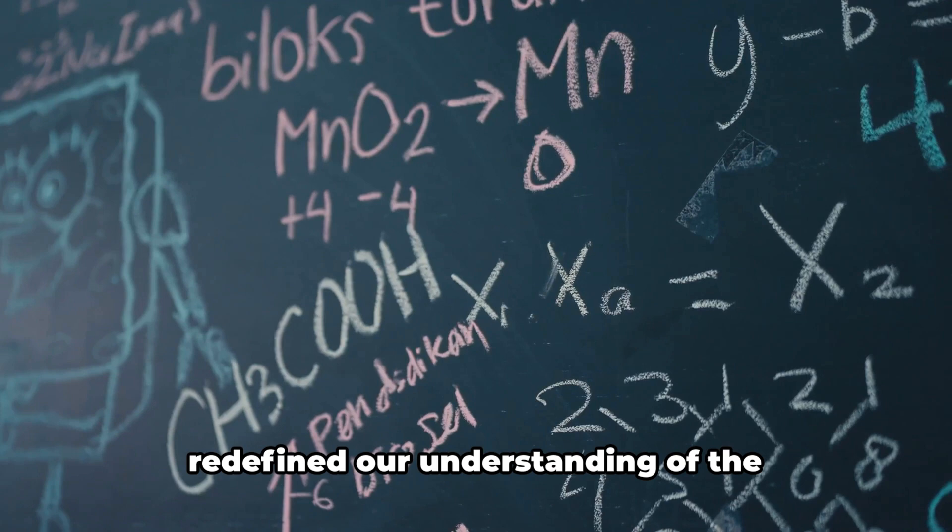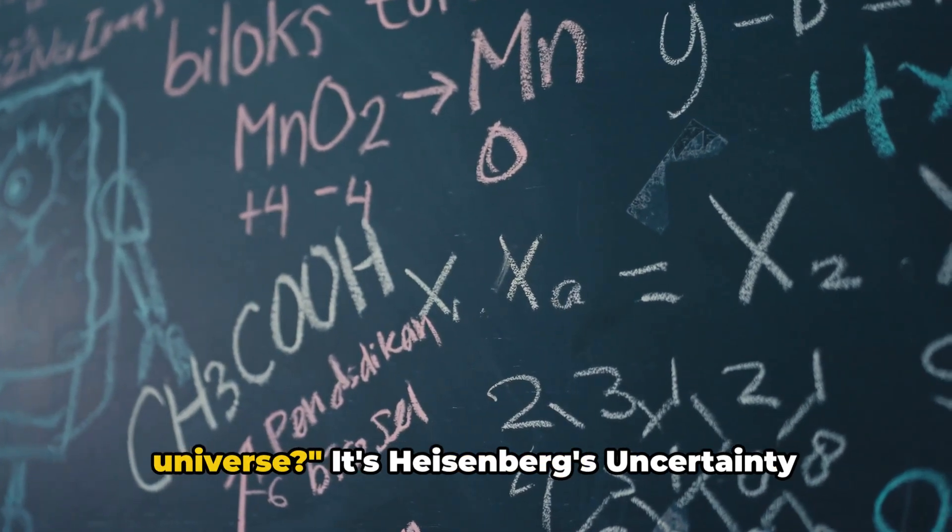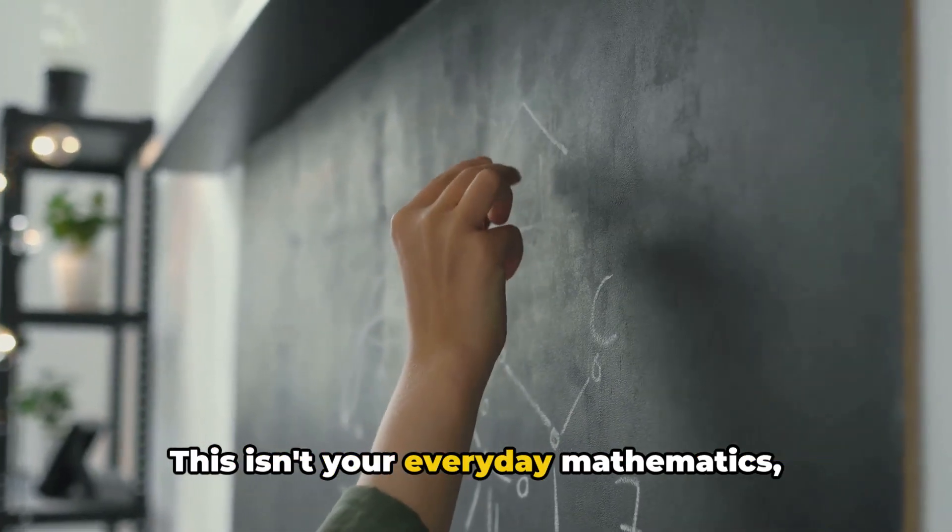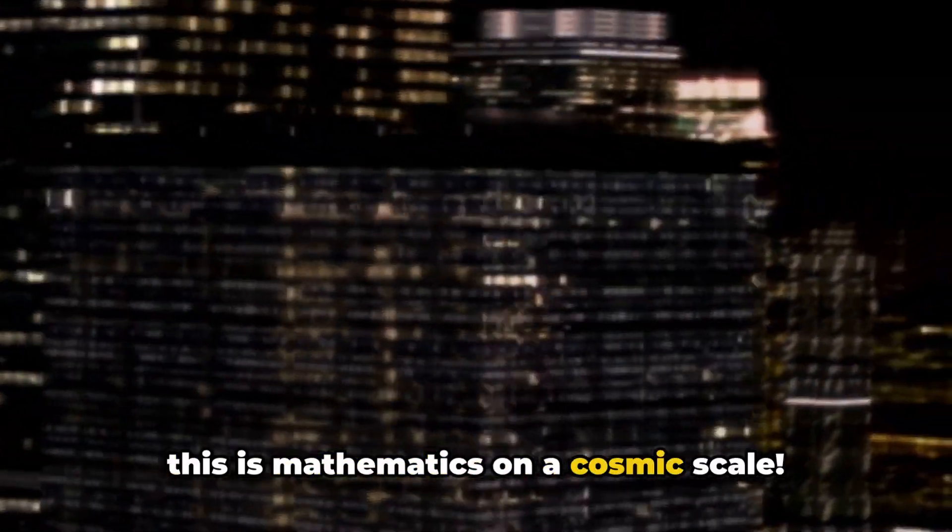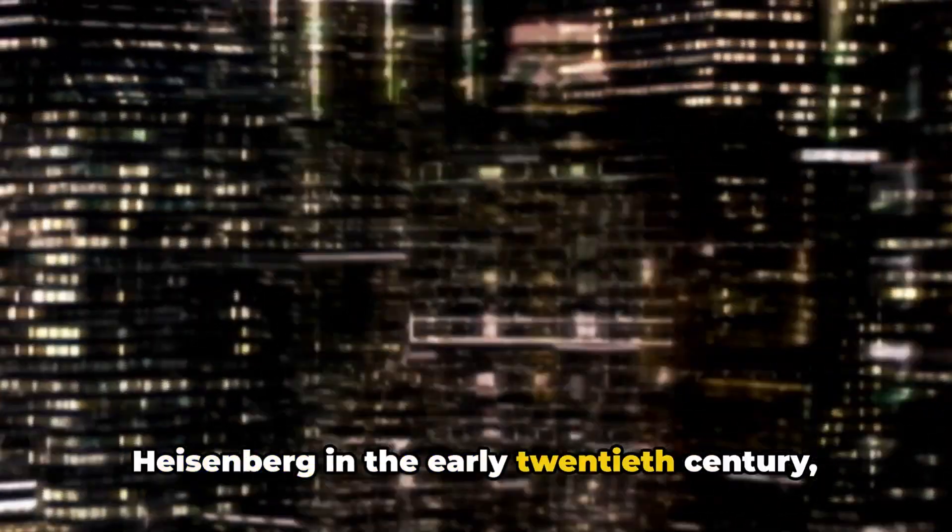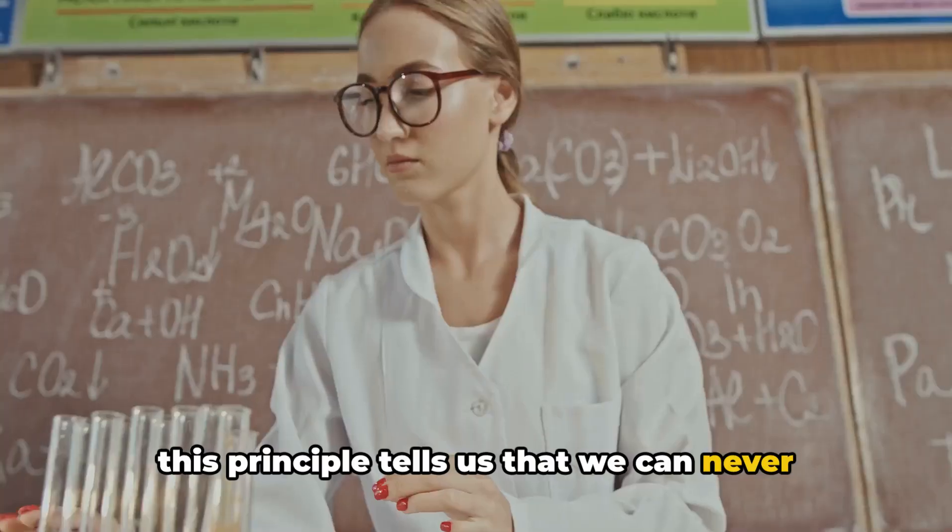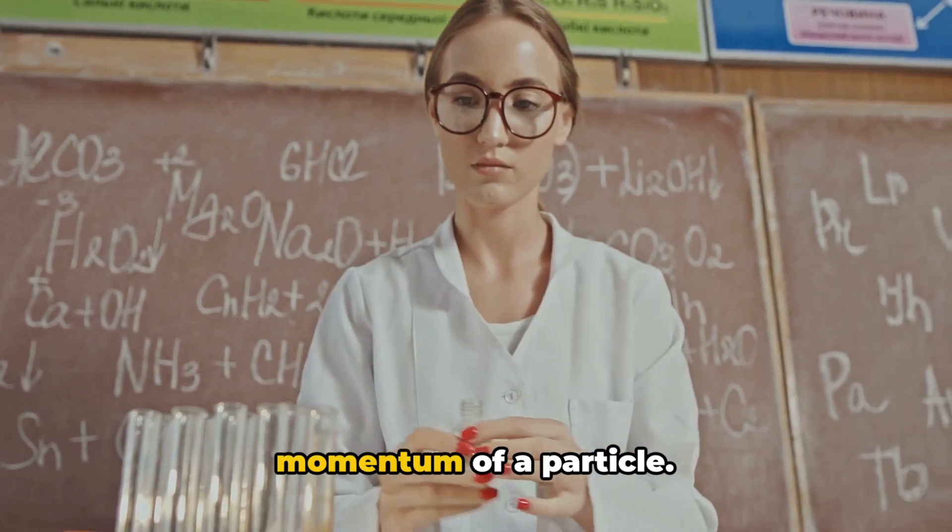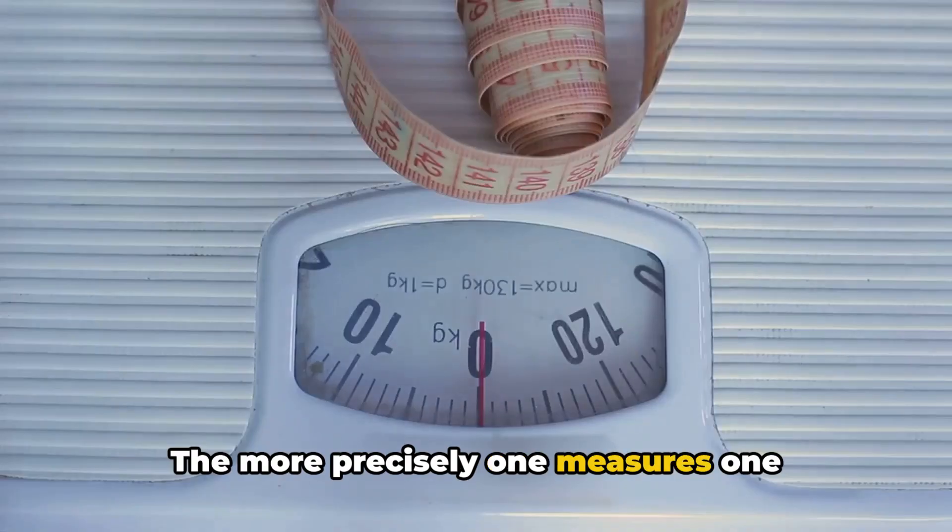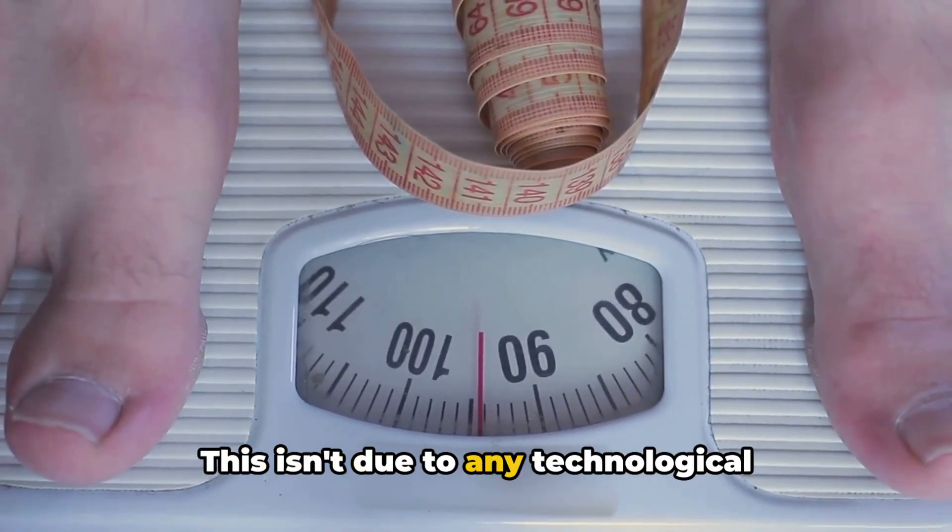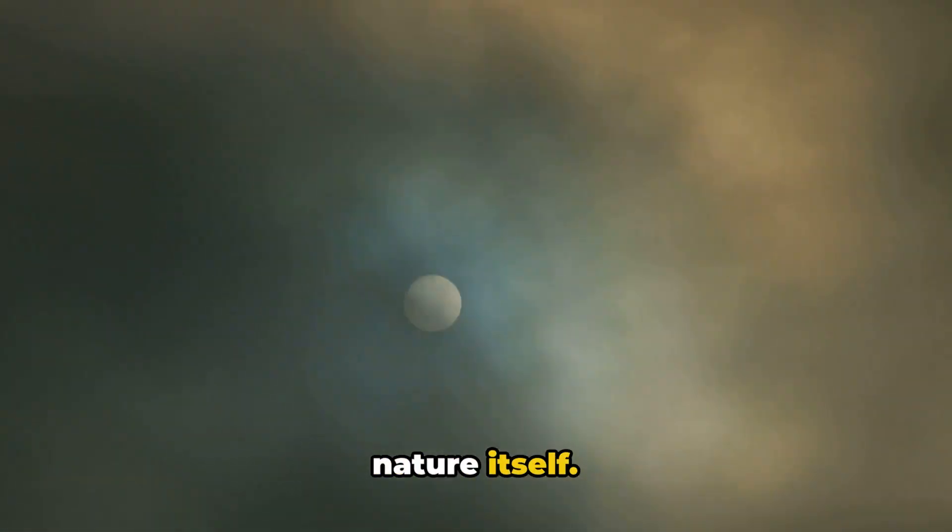Ever heard of the principle that redefined our understanding of the universe? It's Heisenberg's uncertainty principle, a cornerstone of quantum mechanics. This isn't your everyday mathematics. This is mathematics on a cosmic scale. Developed by German physicist Werner Heisenberg in the early 20th century, this principle tells us that we can never simultaneously know the exact position and momentum of a particle. The more precisely one measures one quantity, the less precisely the other can be known. This isn't due to any technological limitations, but a fundamental aspect of nature itself.